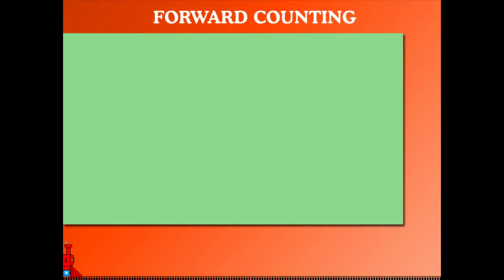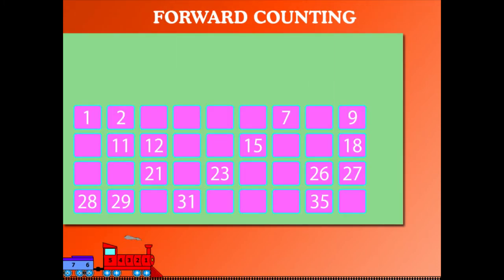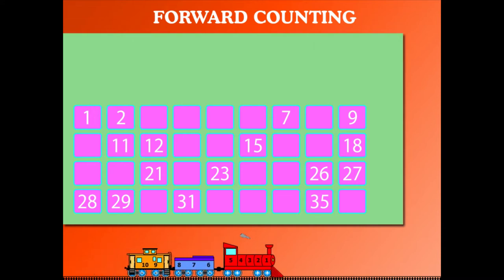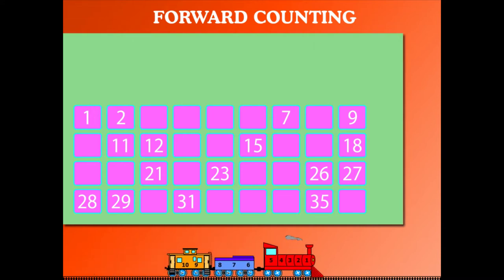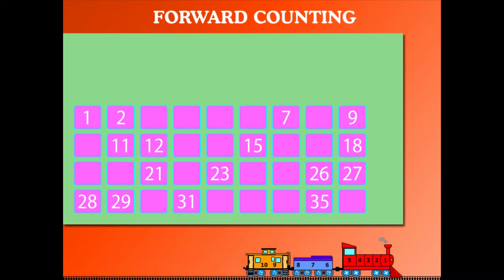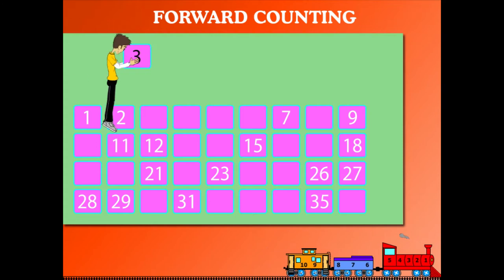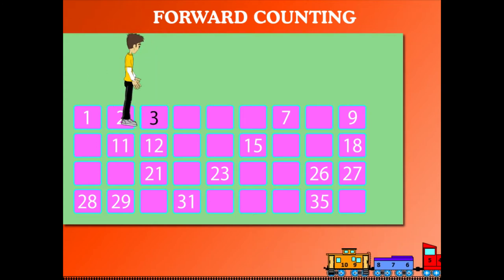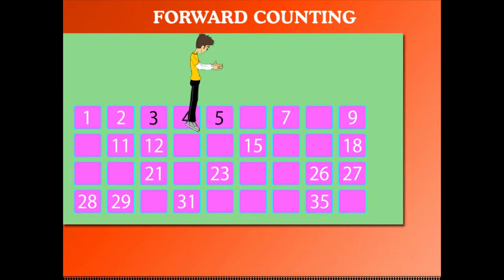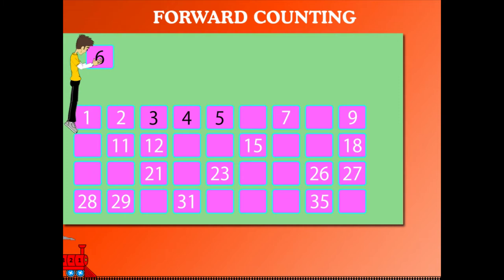Forward counting. Here is an incomplete number count. Sammy brings numbers for the forward count: 1, 2 and 3, then 4, then 5, then 6.